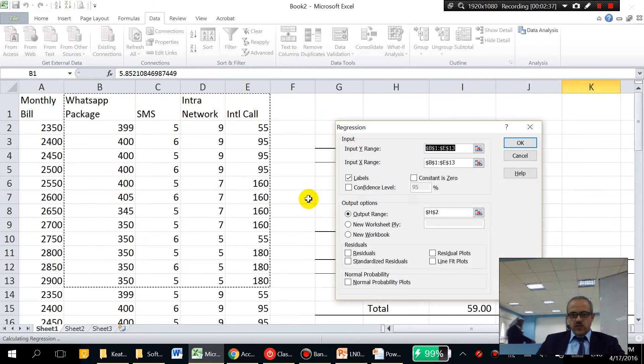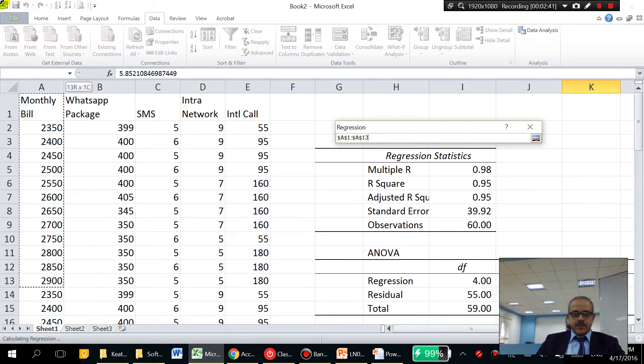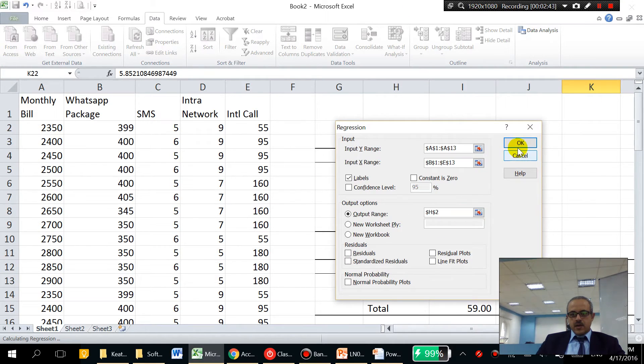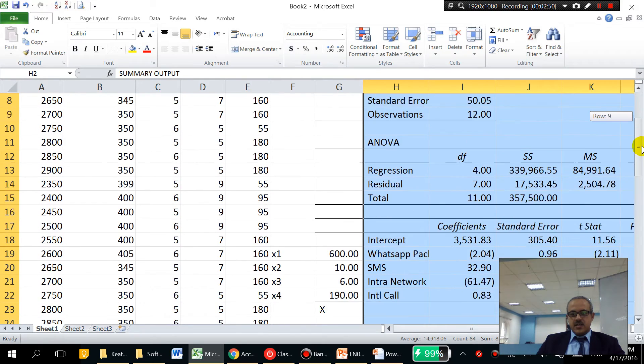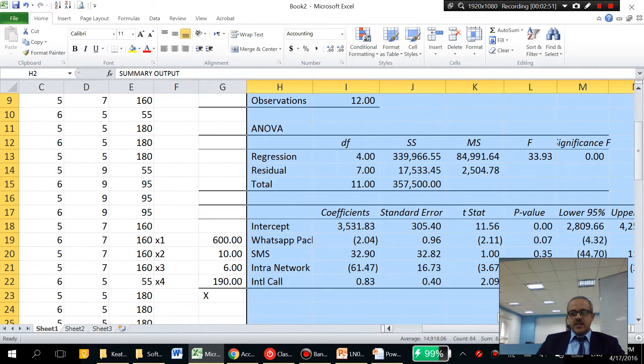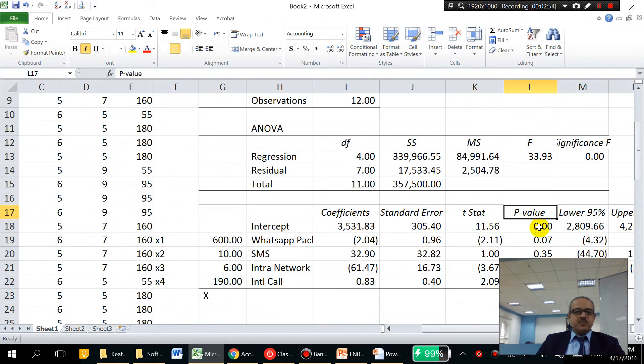Ranges cannot overlap. OK, so this is another regression analysis. And in this regression analysis, we can see here, we've got some p-values that are above 0.05. For example, this SMS based on the data selected, it is not significant.